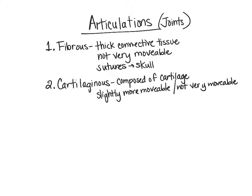Examples of cartilaginous joints include the joints between our costal cartilage and the ribs themselves, and where the cartilage connects the ribs to the sternum. So we have the ribs coming around and then cartilage connecting them to the sternum — those are key locations of cartilaginous joints.